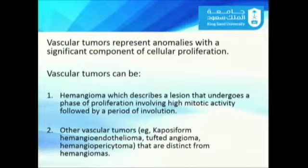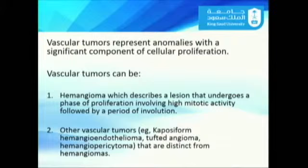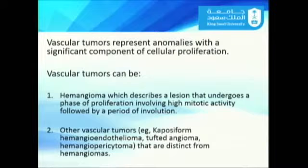Vascular tumors are defined by cellular proliferation. They can be divided into hemangioma — lesions that undergo a phase of proliferation involving high mitotic activity, followed by a period of involution — and other vascular tumors such as Kaposiform hemangioendothelioma, tufted angioma, and hemangiopericytoma, which are distinct from hemangioma but fall under the group of vascular tumors.